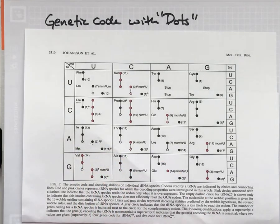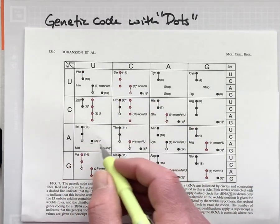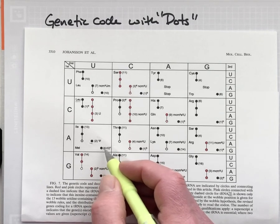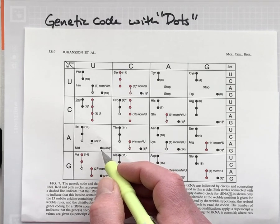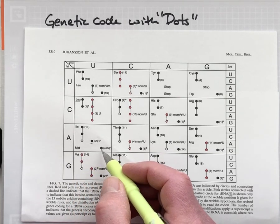It brings to the ribosome isoleucine, and then AUG, there's another tRNA that decodes that particular codon and can only decode that one codon, and that brings methionine to the ribosome.